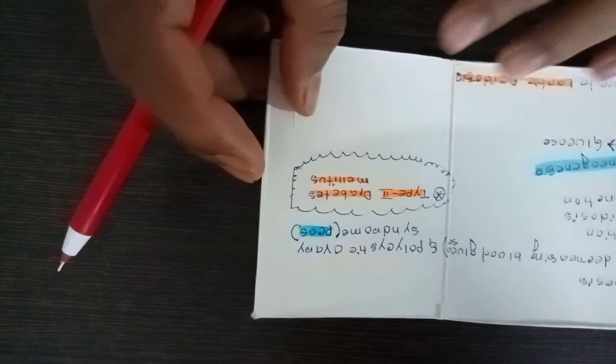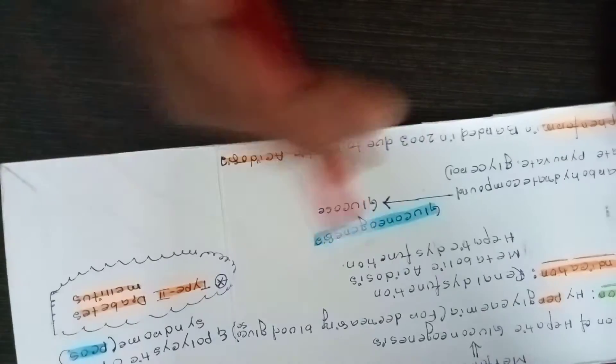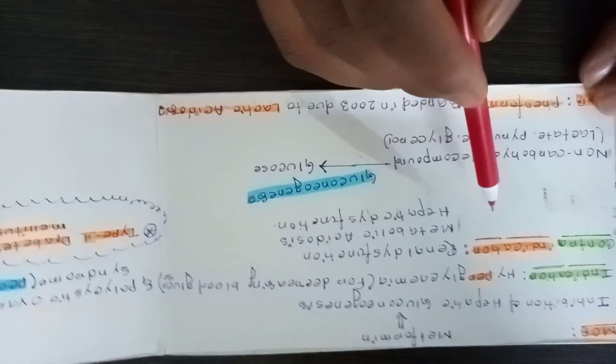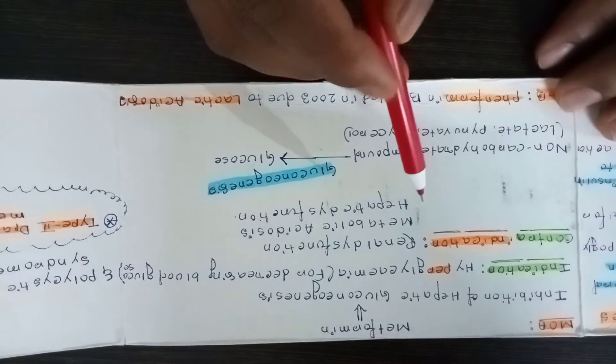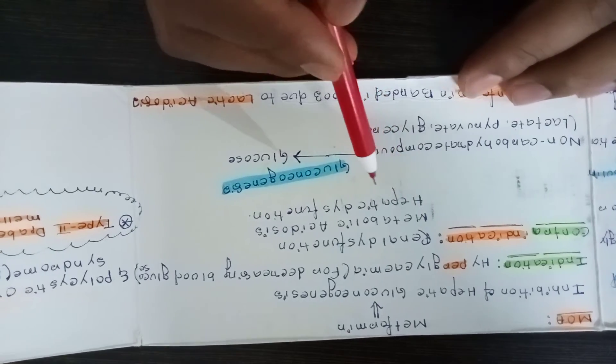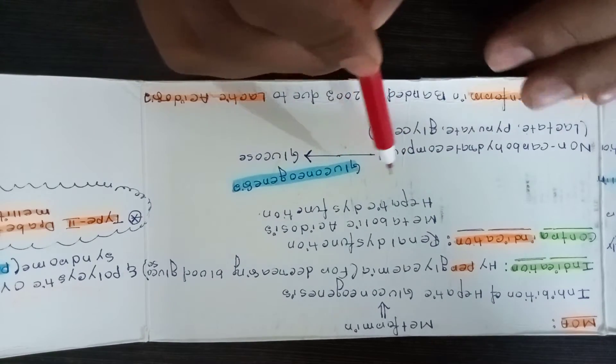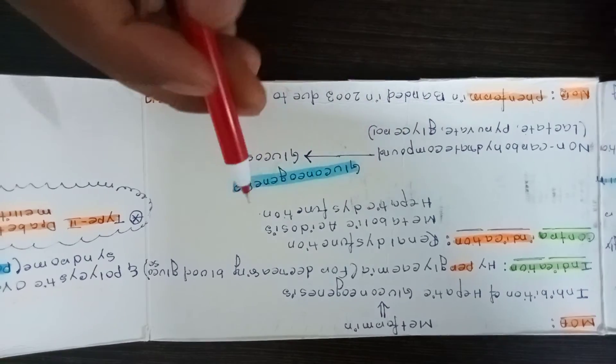We know mainly diabetes mellitus is two types: type 1 and type 2. This is mainly used for type 2 diabetes mellitus. Contraindication means at what situation we should avoid this drug. If the patient has renal dysfunction, metabolic acidosis, or hepatic dysfunction, we should not prescribe this medicine.